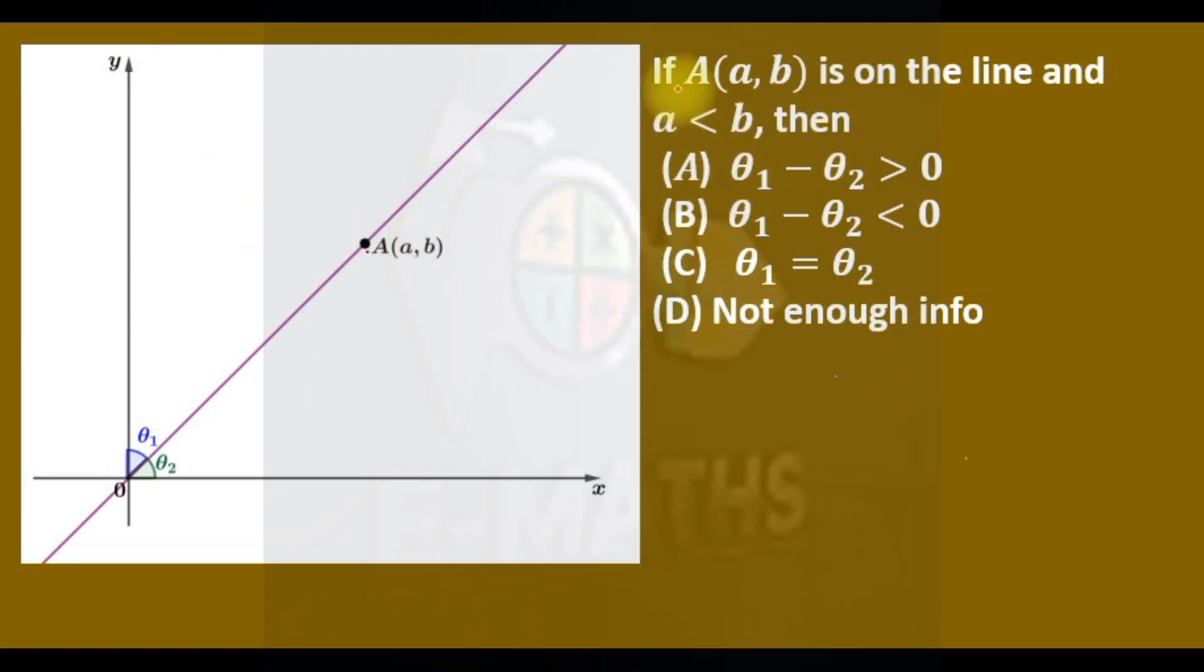Okay, we are given the diagram. They say if A is on the line and a is less than b, then we shall have the following. The answer is that θ2 will be greater than θ1, that is B.